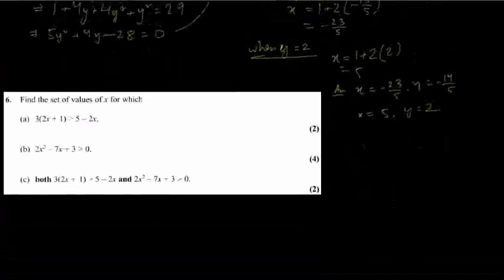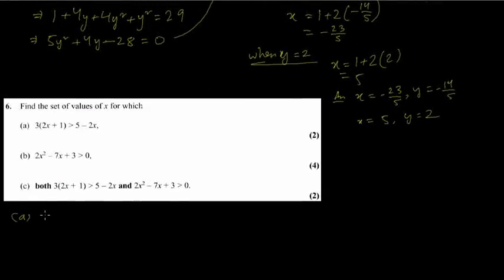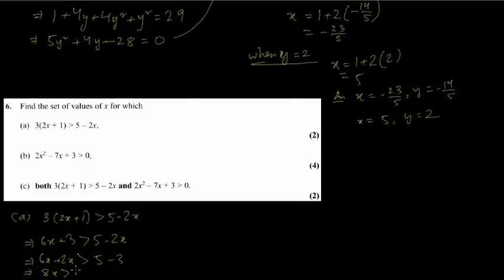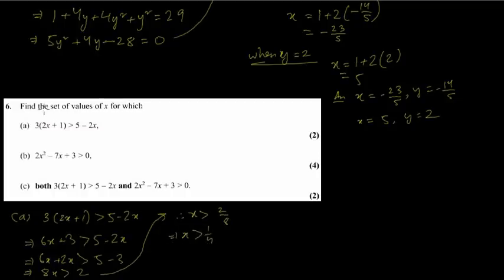Question 6 is inequality. Part a: 3(2x + 1) greater than 5 minus 2x. This is a linear inequality. Expanding: 6x plus 3 greater than 5 minus 2x. Bringing all x to the left: 6x plus 2x greater than 5 minus 3. Remember, we only reverse the inequality sign when dividing or multiplying by a negative number. So 8x greater than 2, therefore x is greater than 1/4.